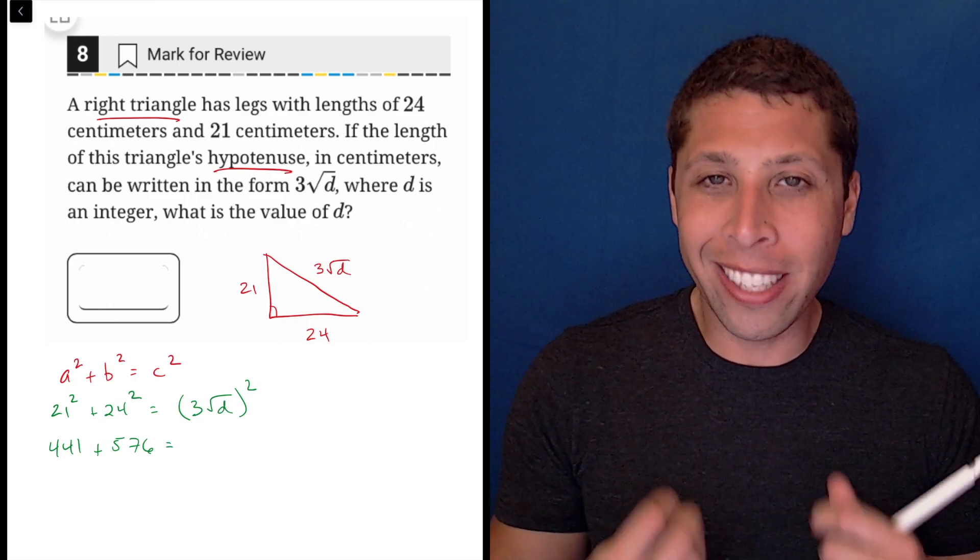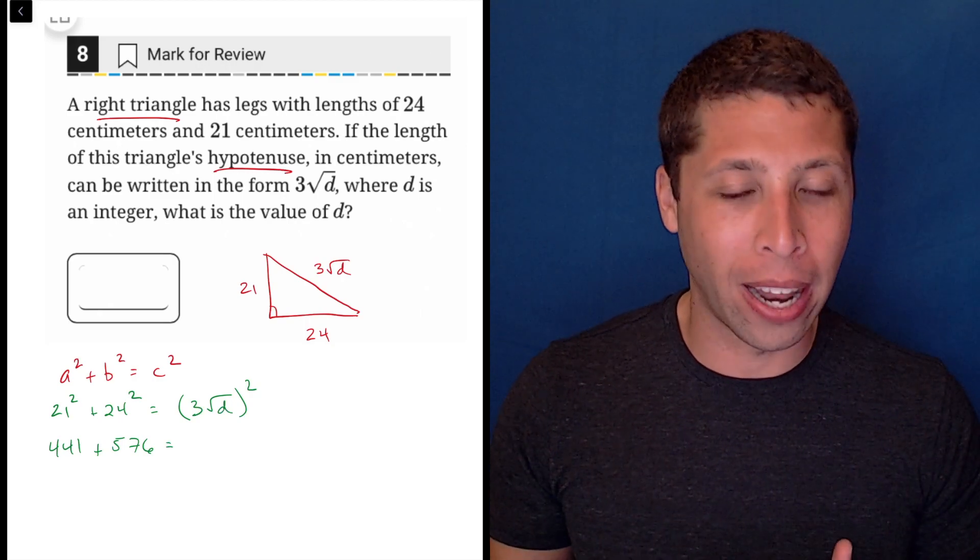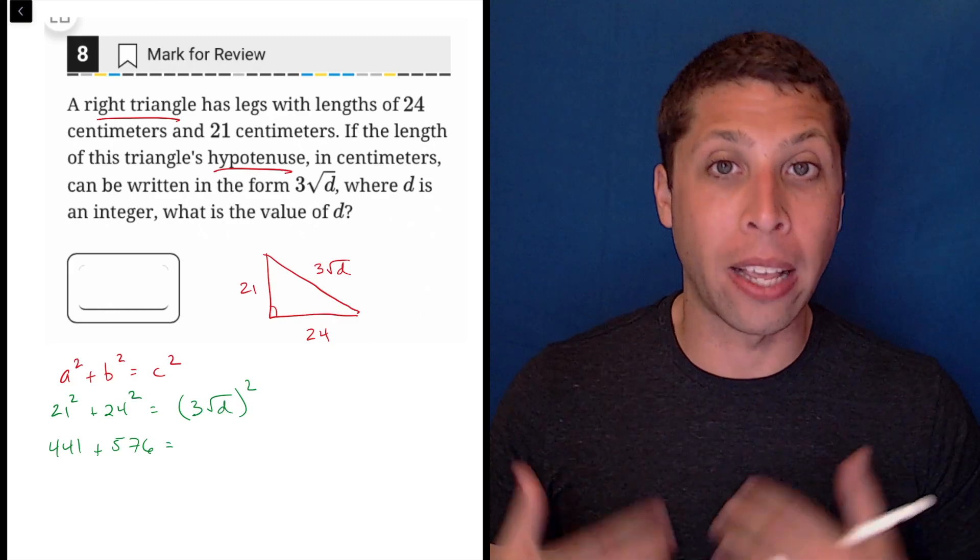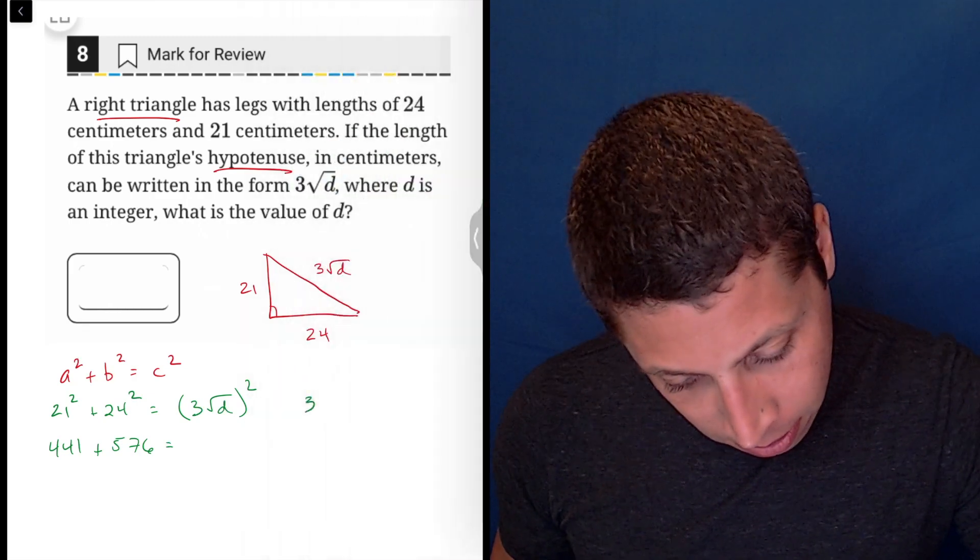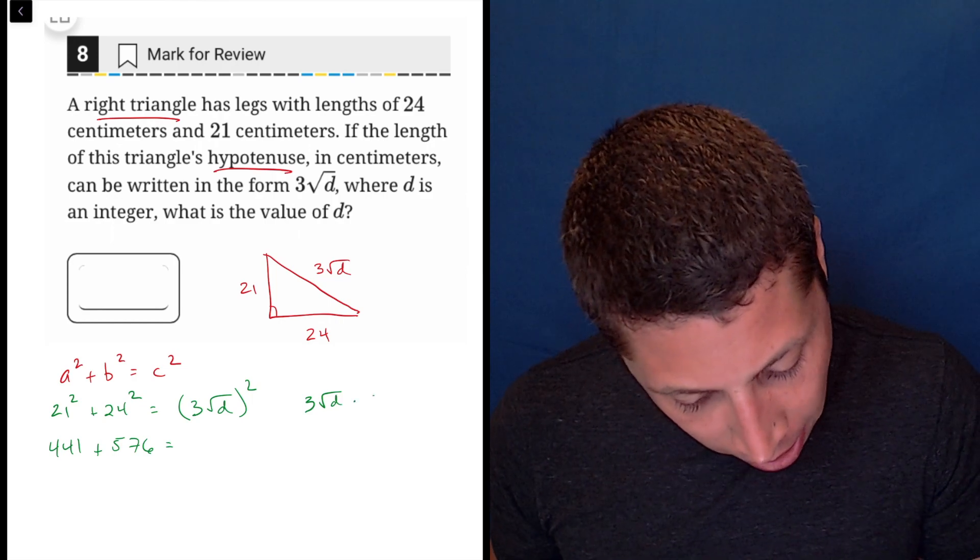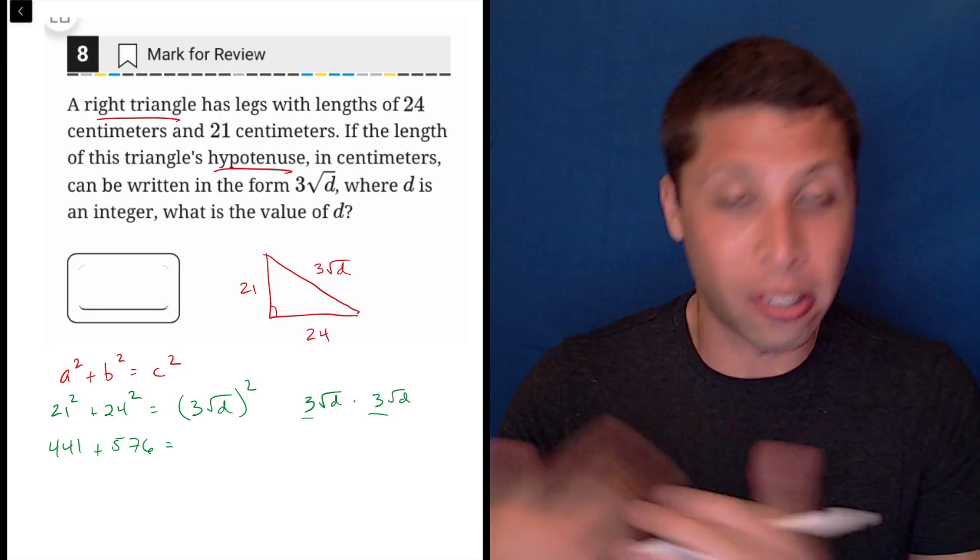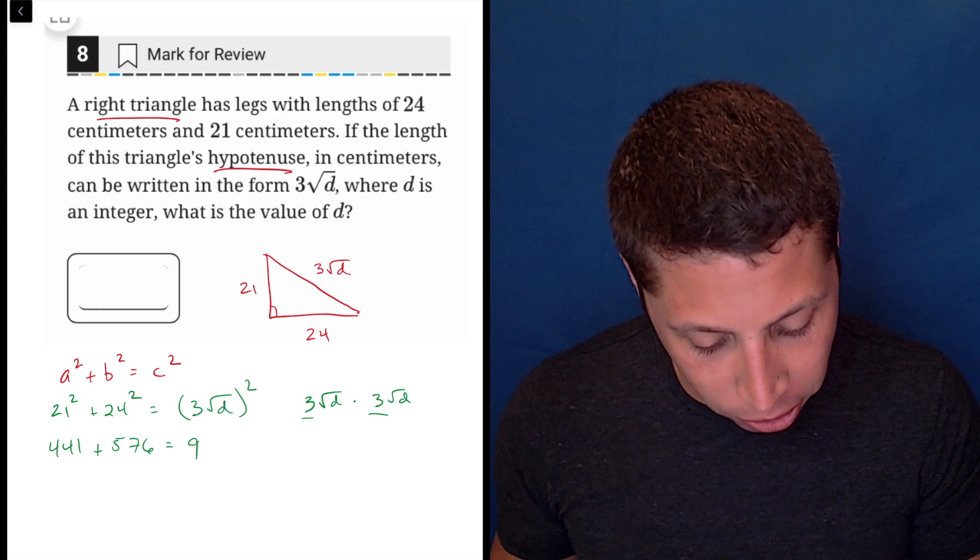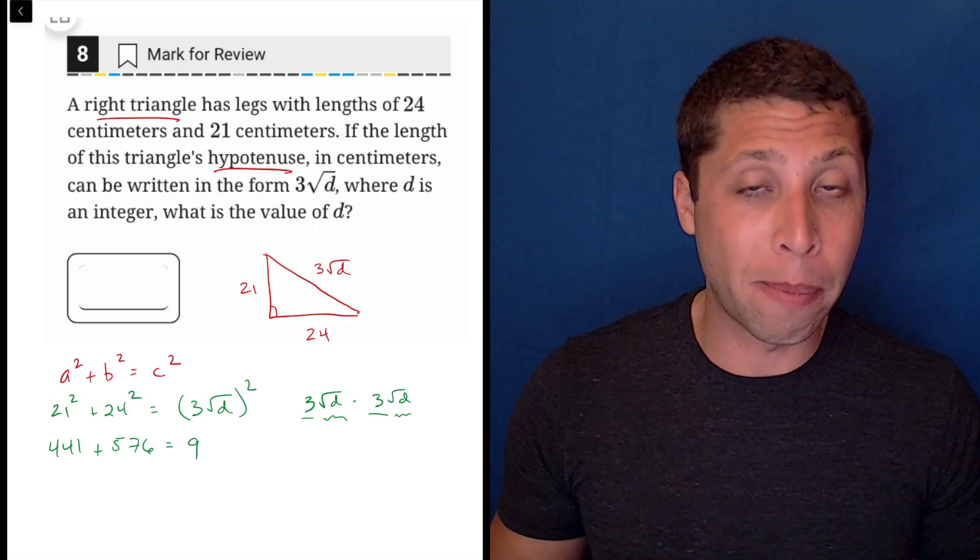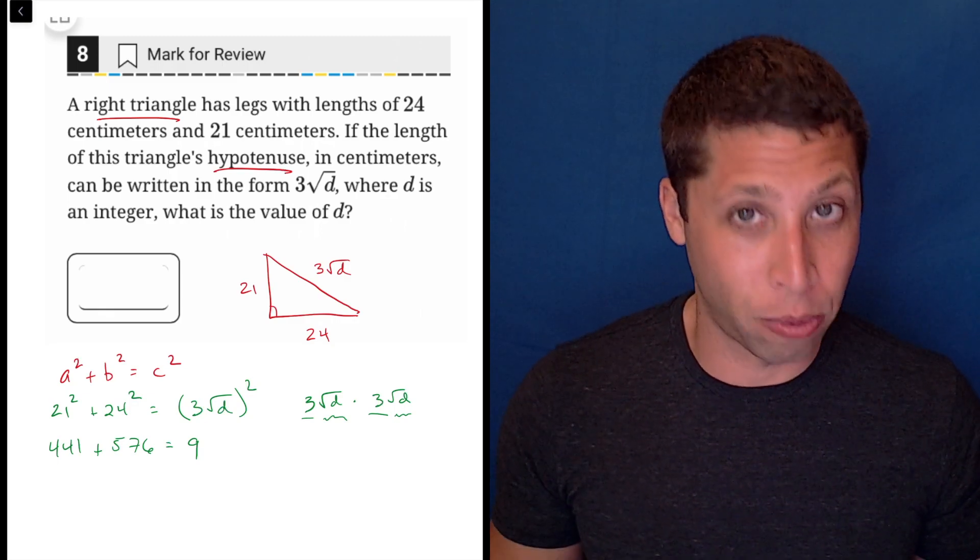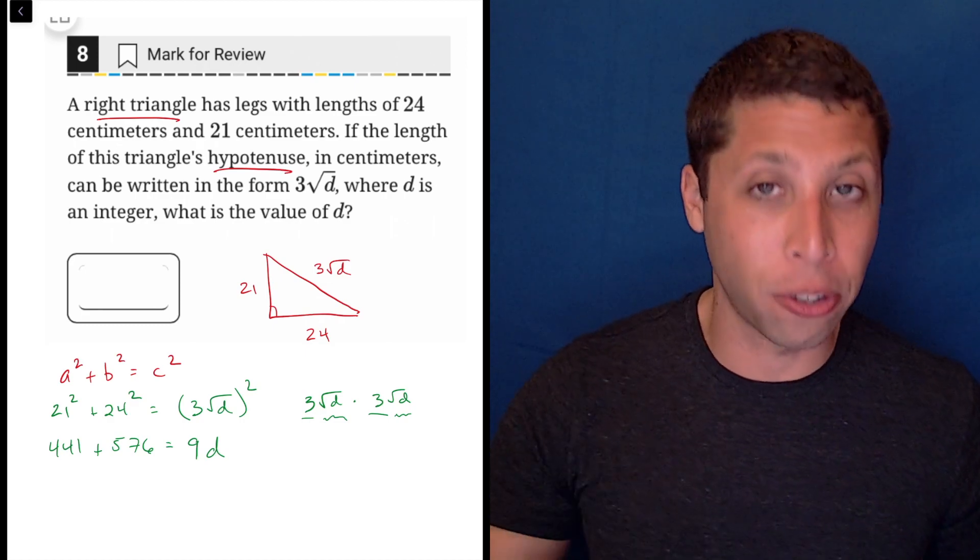I resist the word distribute here because it's not behaving like distribution in the way that you normally think about it. What's really happening is we're multiplying three radical d times three radical d. So what ends up happening is the two threes, since they're outside the radical, can be multiplied by each other, so that's nine, and then the two radical ds also can be multiplied by each other because they both have the d part, and then radical d times radical d is just d. So it does kind of work out now in a nicer way.